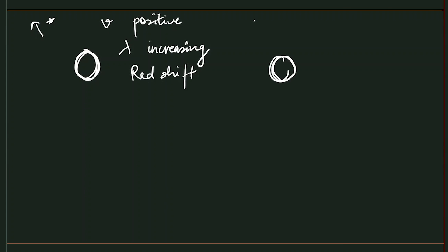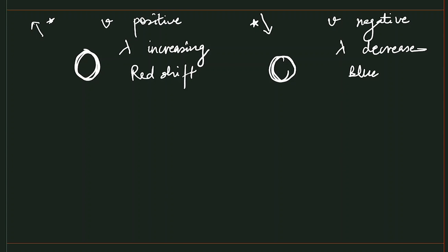By contrast, if a star is moving towards the Earth, the velocity is taken as negative and lambda decreases — the wavelength shifts towards shorter values, which we call a blue shift. In this problem, since we have recession, the shift is a red shift.